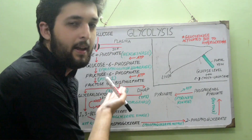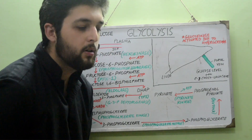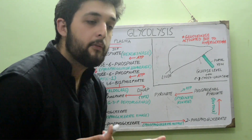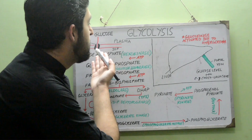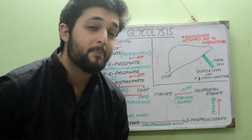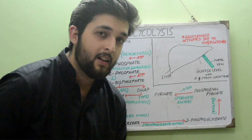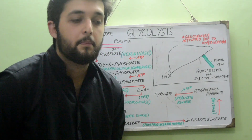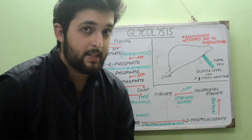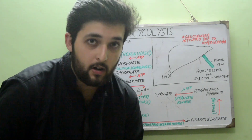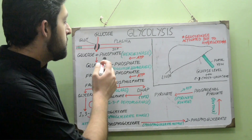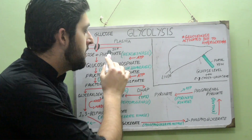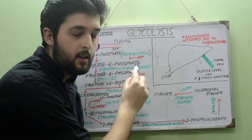Once glucose-6-phosphate is formed, we don't want it to leave the cell — we've already invested the energy. Luckily, there is no transporter to carry glucose-6-phosphate back out of the cell. This trapping is achieved by the enzyme hexokinase, which catalyzes this first committed step.